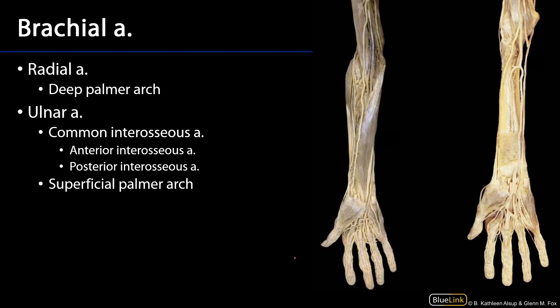The brachial artery ramifies into the radial and ulnar arteries, usually just proximal to the antecubital fossa. The radial artery travels down the lateral aspect of the forearm, and the ulnar artery travels deep but predominantly medial down the forearm. We've stripped away many of the muscles of the forearm to better visualize this — here we can see the brachial artery and then the division into the radial and ulnar arteries.